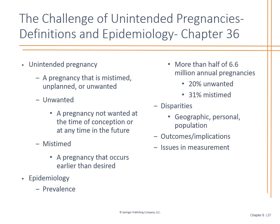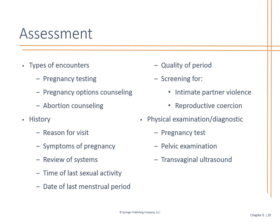Unintended pregnancies — we see this a lot, especially in adolescents. Sometimes the adolescent comes alone, and it could be an older adult too — you could have a 12-year-old and a 40-year-old both with unintended pregnancies. Look at the social dynamics, understanding the outcomes and implications of carrying on the pregnancy or not. When these patients come in, we have pregnancy testing, pregnancy options counseling, and we also have to provide abortion counseling. Even if you are not in approval of abortion, it is your job to give the patient every option available.